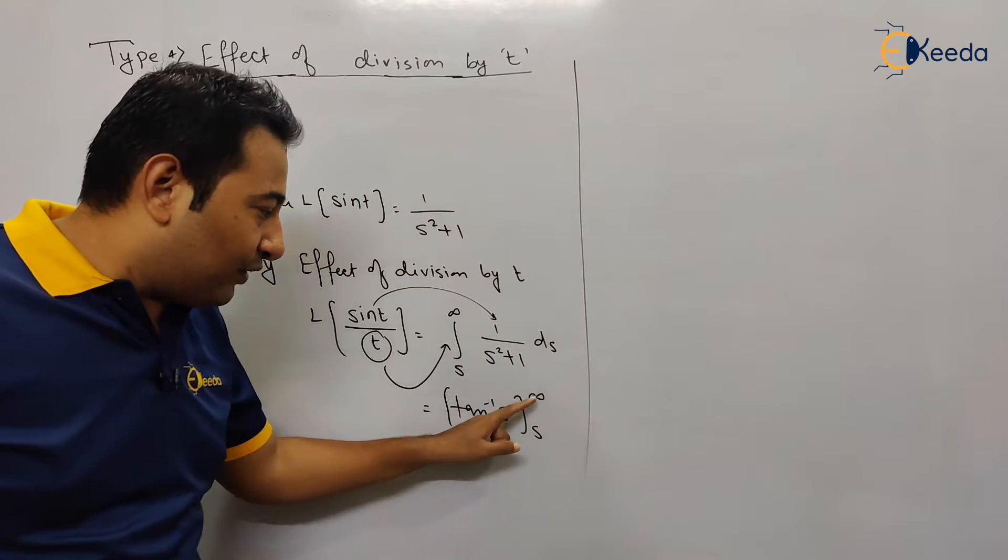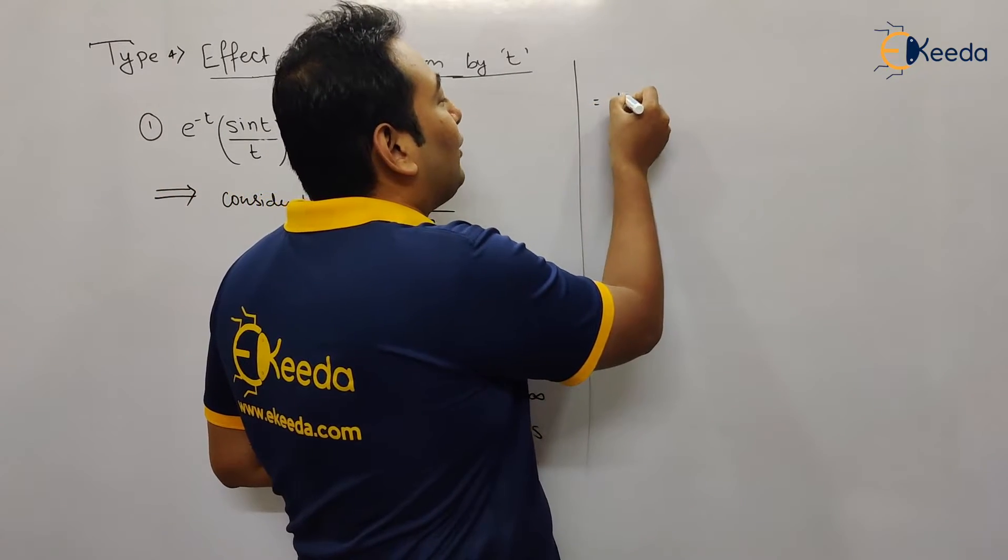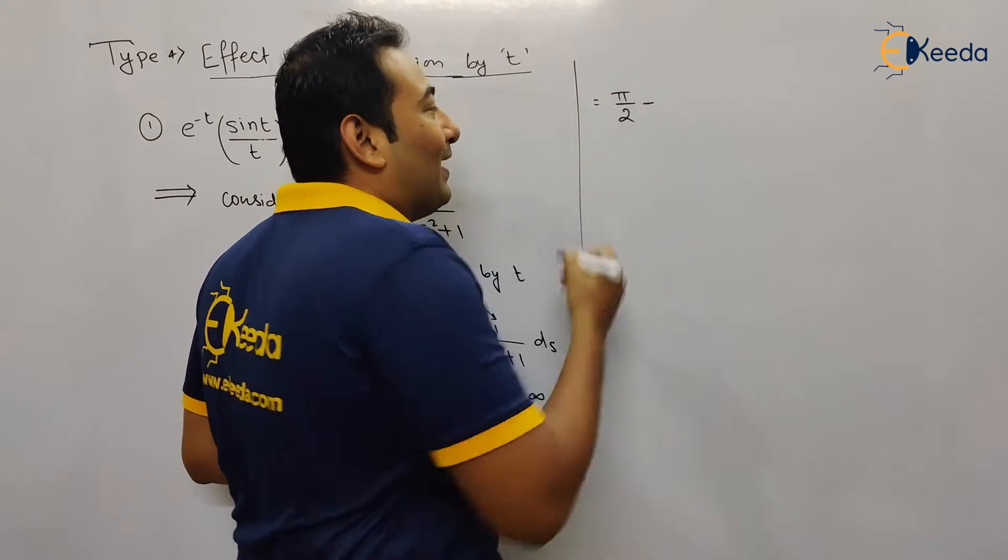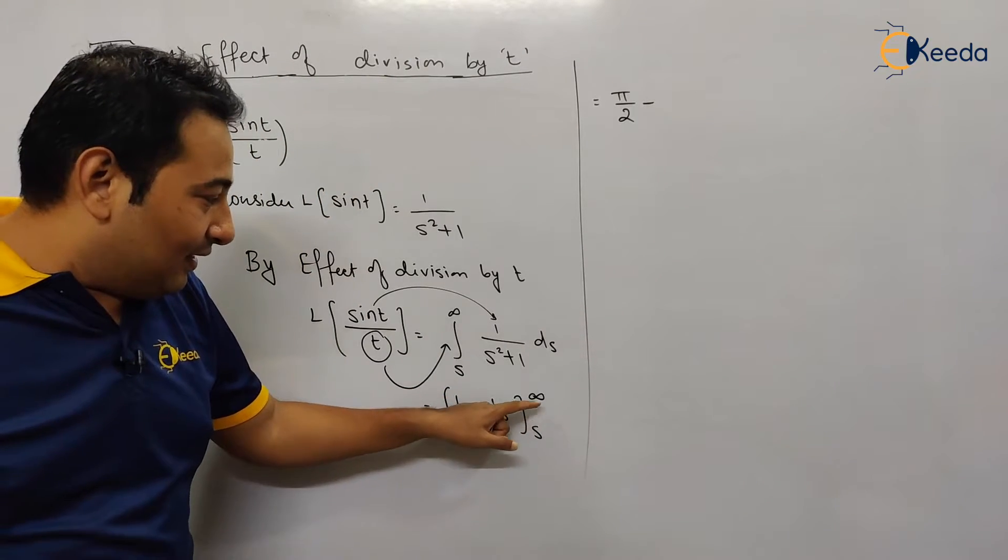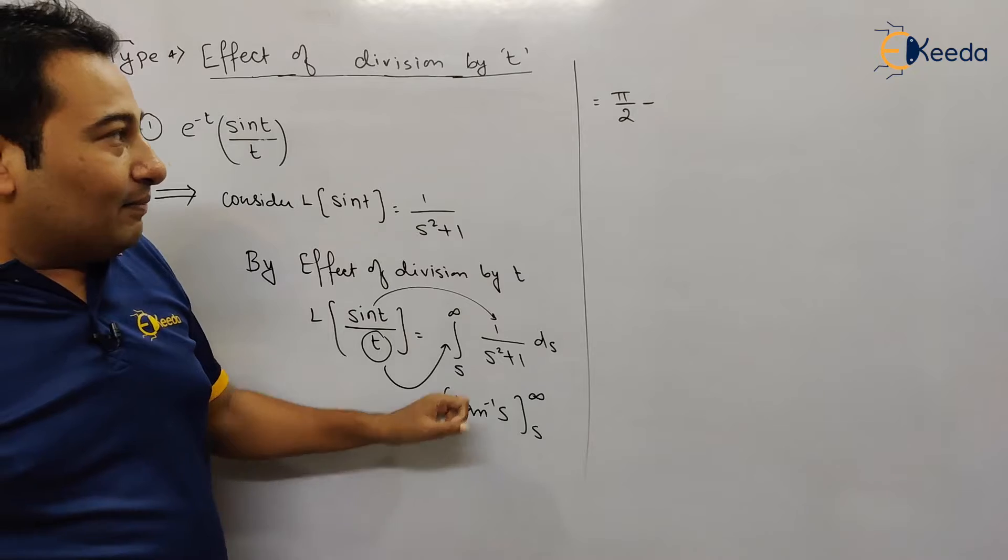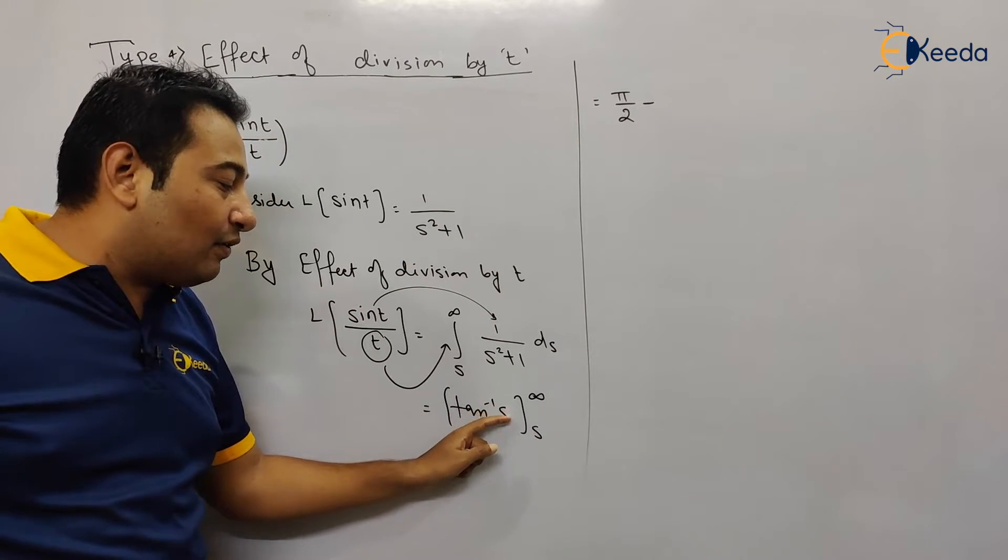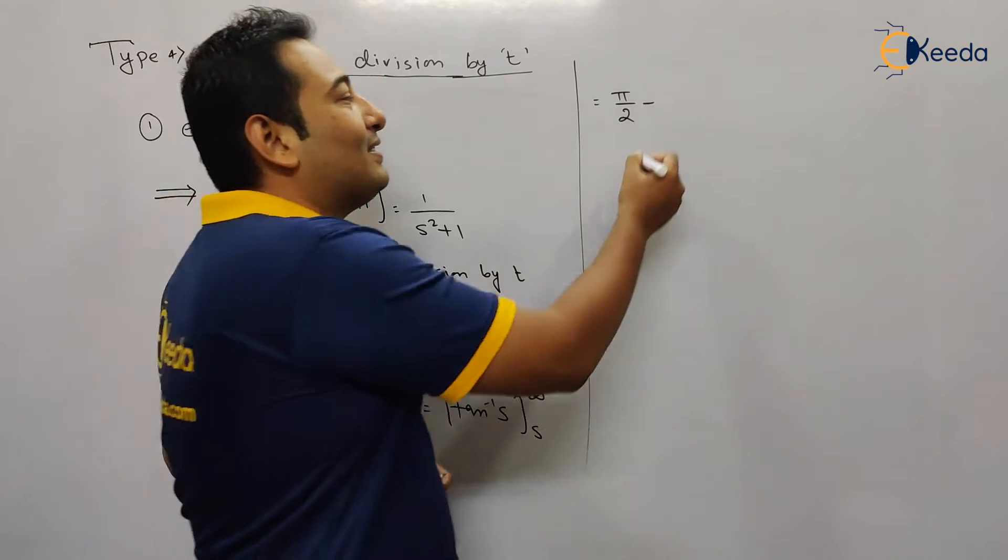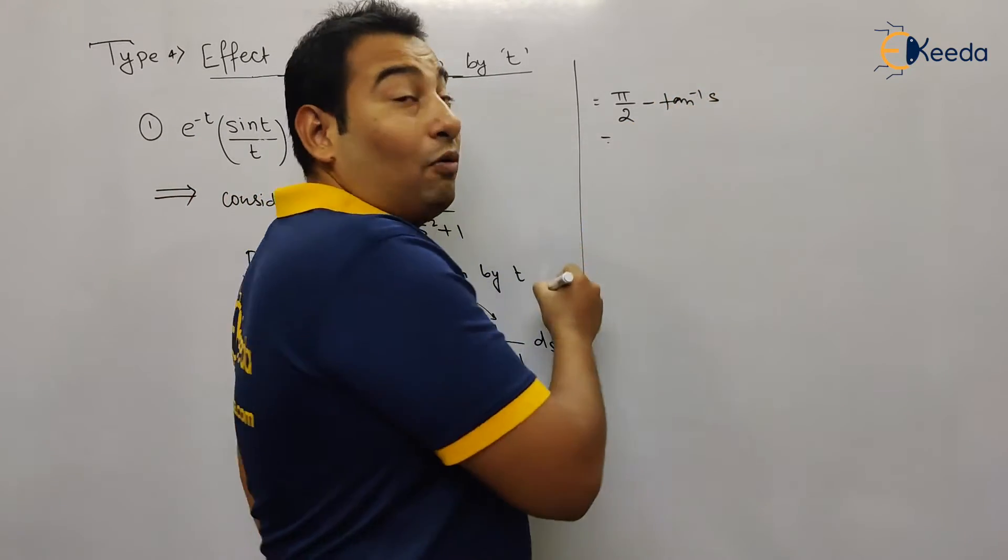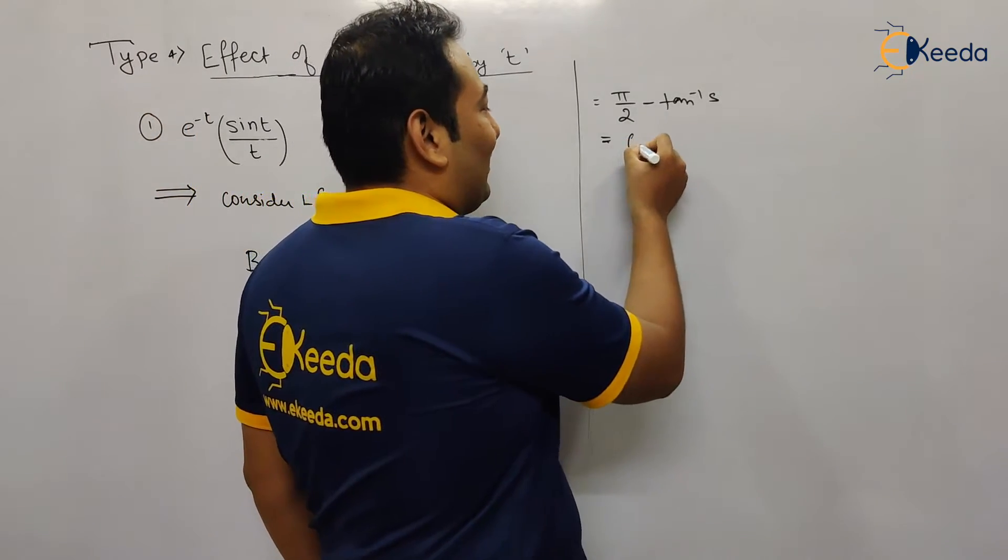Let us move on. Upper limit minus lower limit. If you put infinity, this will become tan inverse infinity, and we know tan inverse infinity is π by 2, minus tan inverse infinity. Formula number 6, π by 2. And minus lower limit, so we're gonna put s. So in place of s, if you're gonna put s, that will remain as it is, that means tan inverse s only.